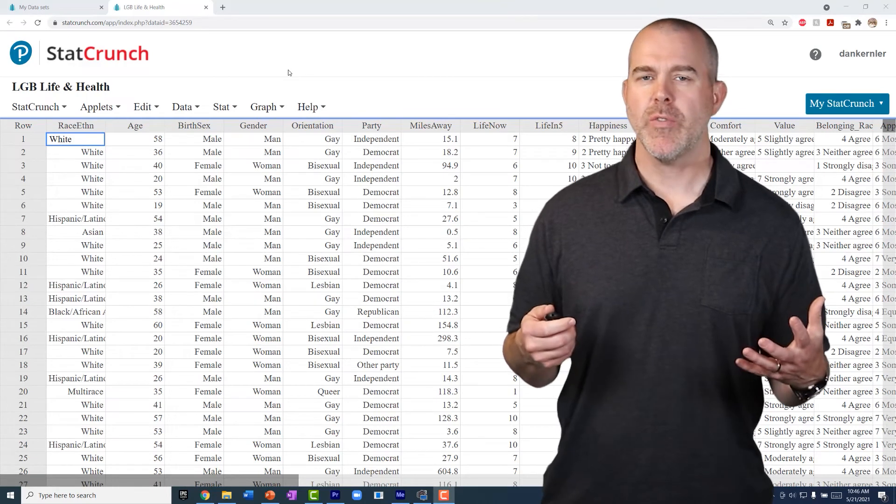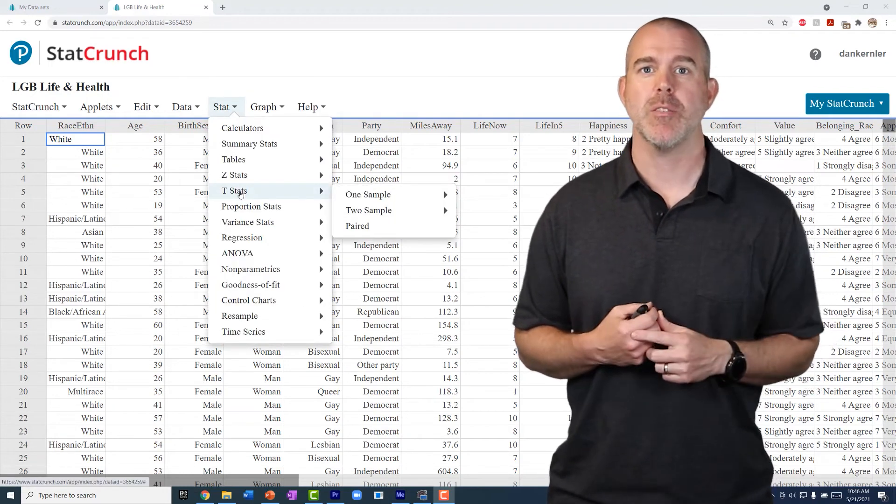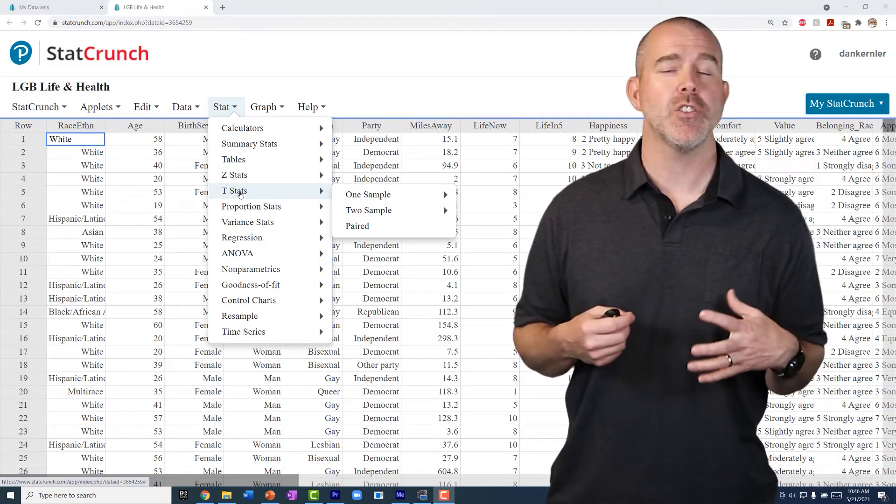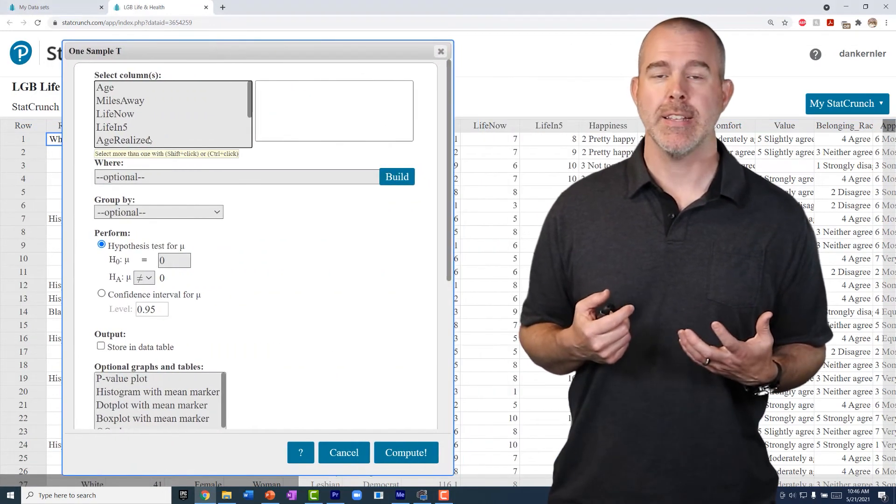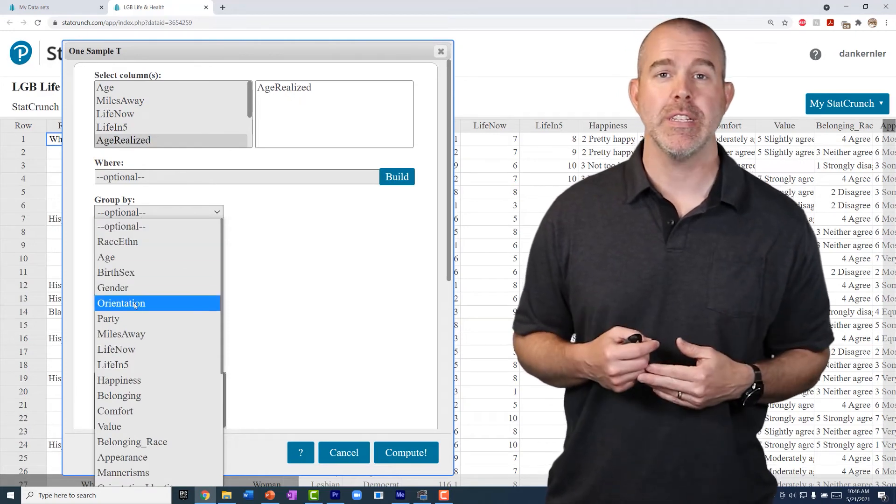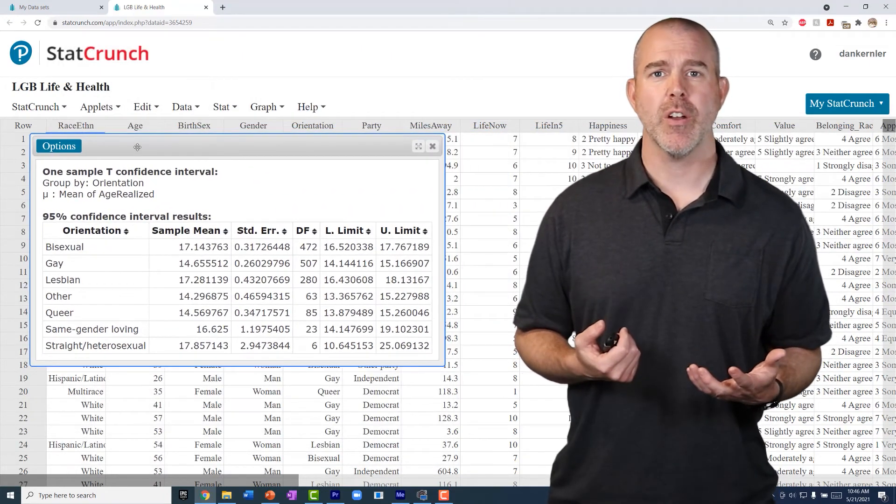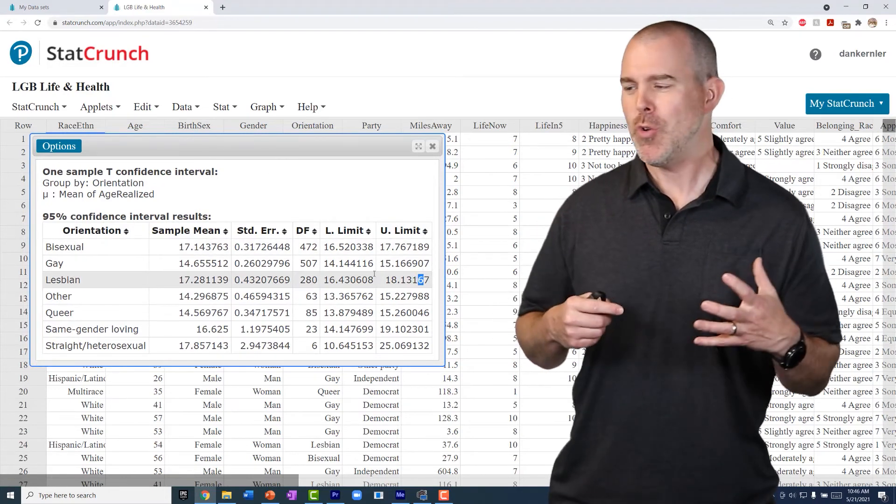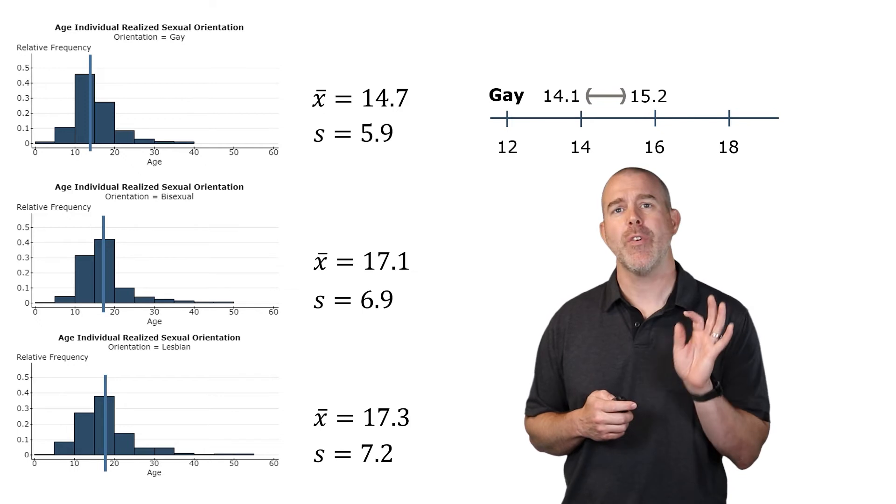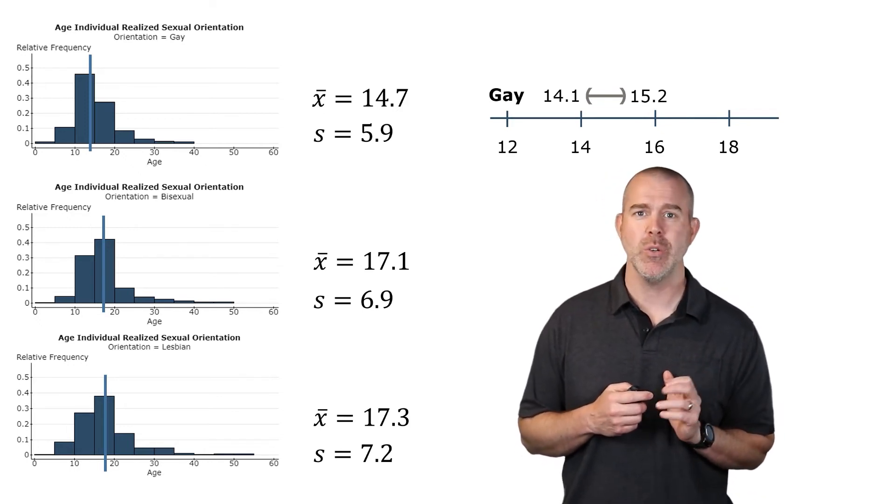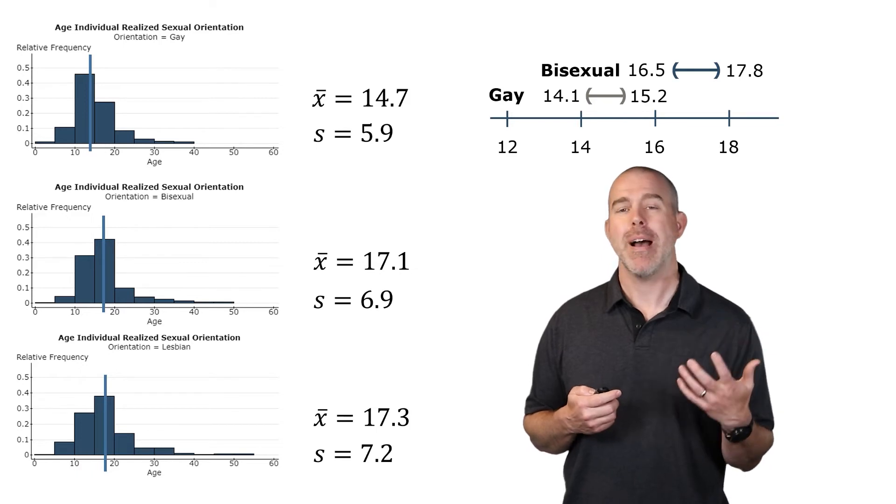Like most things in StatCrunch, this is fairly straightforward as long as you know which menu to use. Now in this case, we want to do stats and we want t stats. We want t stats because we're finding a confidence interval for a mean just from data. So we'll choose t stats one sample with data. Then we'll pick our variable. In this case, we want to do age realized. And because we want to do the different groups, we're going to group by their orientation. We'll do a confidence interval, hit compute. And then we get these three here that we're going to focus on. You can see there are some other groups in here, but that just became too much to put all on one slide. So I focused on the main three groups. If we want to visualize that, I've got a graphic up here. You can see for gay men, the interval was 14.1 to 15.2. So we're 95% confident that the real mean age realized for all gay men is somewhere in there. And then we have bisexual and lesbian.